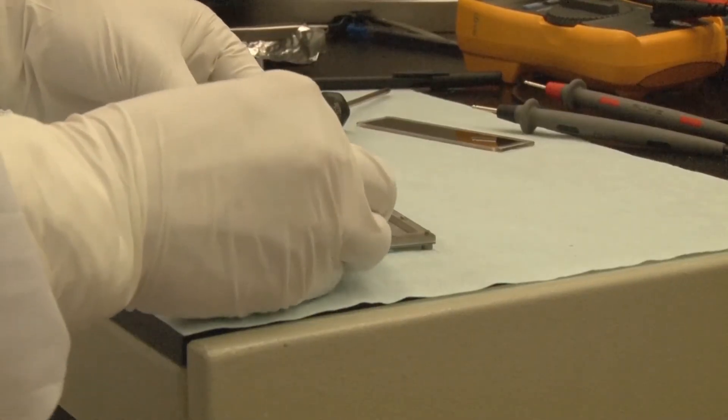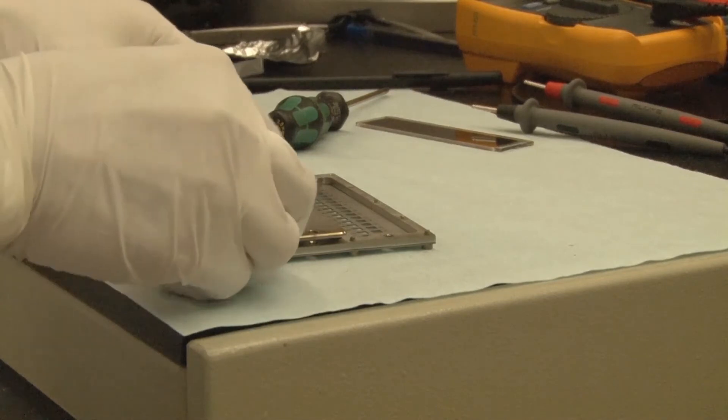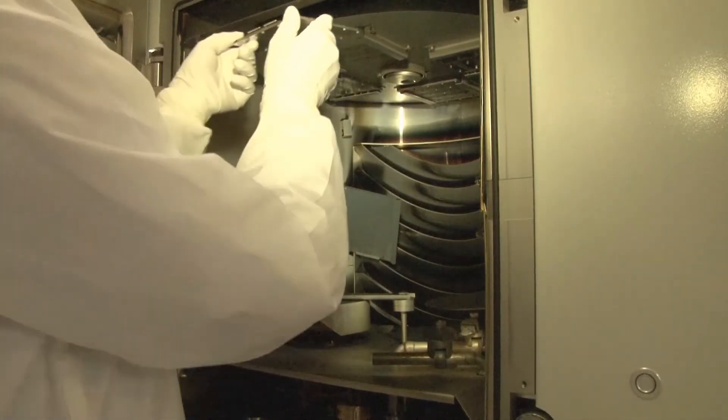Next, the samples are covered by a mask. The mask determines the areas on the sample where the metal contacts are deposited.